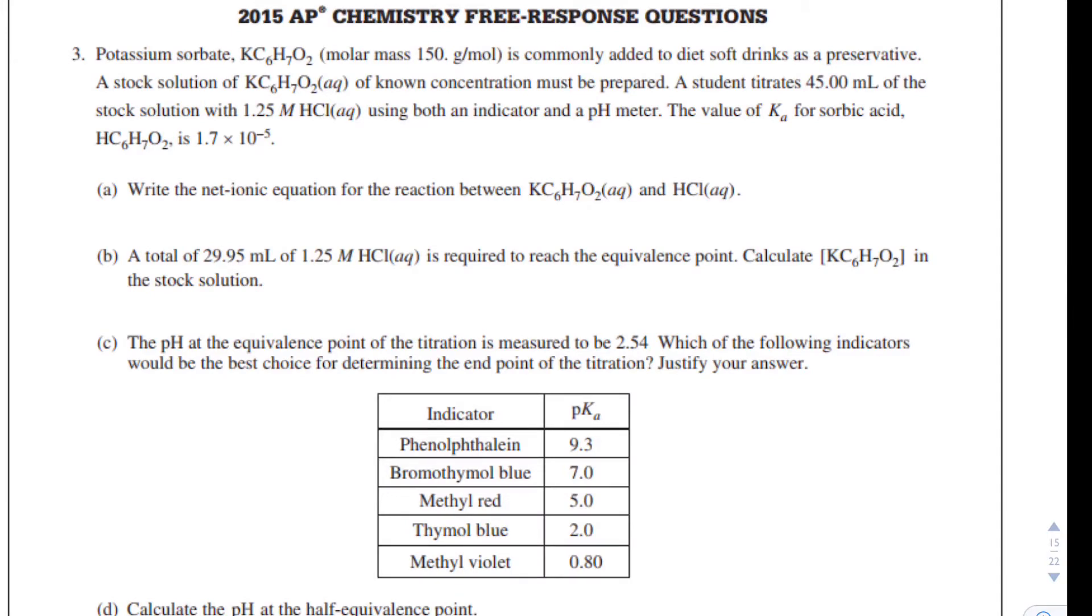A stock solution of potassium sorbate of known concentration must be prepared. A student titrates 45 milliliters of the stock solution with 1.25 molar HCl using both an indicator and a pH meter. The Ka value for sorbic acid is 1.7 times 10 to the minus 5.